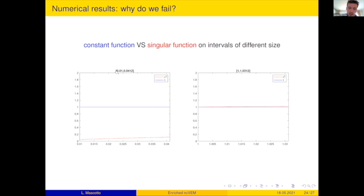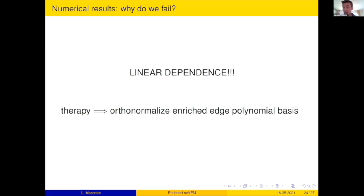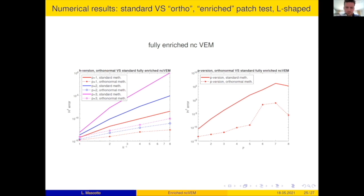So you need the therapy for this. I need to also orthonormalize the edge basis involved in the singular functions. And this is what they do. And let's see on the patch test what happens. On the patch test, you see an incredible improvement for H-version. Let's say you have like 10 orders improvement. So now the method that we offer is reliable, at least, and the P-version something similar. You have again 10 orders of improvement.